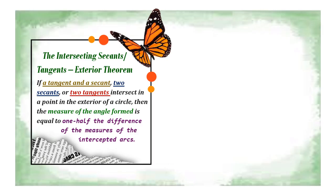The Intersecting Secants or Tangents Exterior Theorem states that if a tangent and a secant, two secants, or two tangents intersect at a point in the exterior of a circle, then the measure of the angle formed is equal to one-half the difference of the measures of the intercepted arcs. Based on this theorem, we have three various cases.